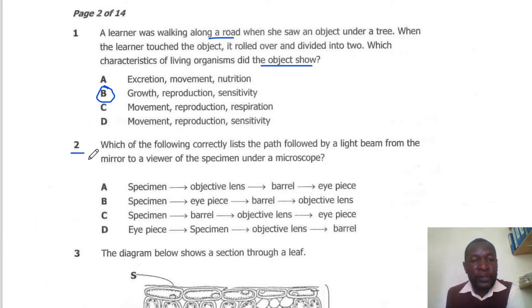Question 2. Which of the following correctly lists the path followed by a light beam from the mirror to a viewer of the specimen under the microscope? Light will first leave the mirror and pass through the specimen, then enter the objective lenses, then pass through the barrel and finally the eyepiece. So the correct answer here is A.